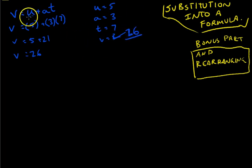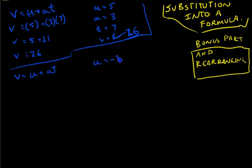So that's our substitution into a formula. I'll just do that one more time. I really want you to get the idea that I value the use of those brackets. If U equals negative 3, A equals negative 8, and T equals 9.